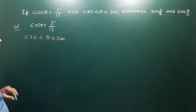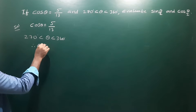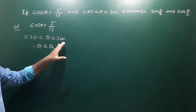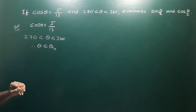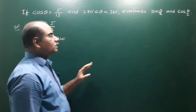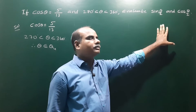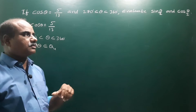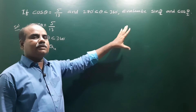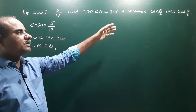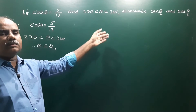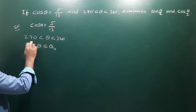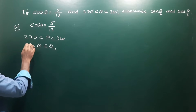270 less than theta less than 360 means theta belongs to Q4 — the fourth quadrant. We have to find the values of sin theta by 2 and cos theta by 2. To find these values, first we have to verify in which quadrant theta by 2 lies. For that, divide the inequality by 2.